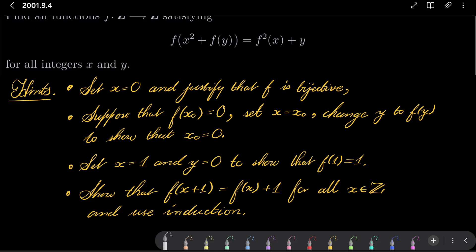Suppose that f of x zero equals 0 and set x to be x zero and change y to be f of y to show that, in fact, x zero must be 0.